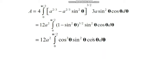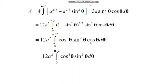Simplifying, this is 12a² × integral from 0 to π/2 of cos³θ · sin²θ · cosθ dθ, which equals 12a² × integral from 0 to π/2 of cos⁴θ · sin²θ dθ. Now we simplify this definite integral using the reduction formula.